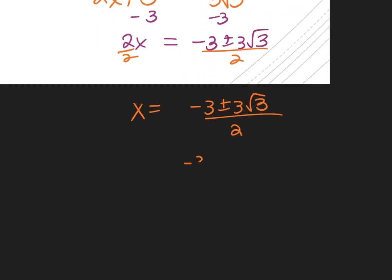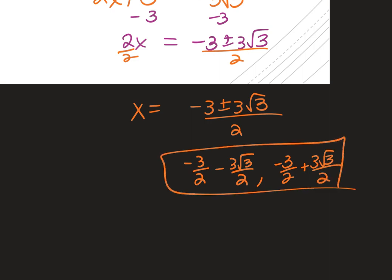If this were multiple choice it would be separated into two distinct answers. If it's open-ended — like your homework or WebAssign — you can enter it as written. Any questions on the even root property?